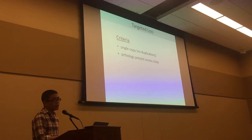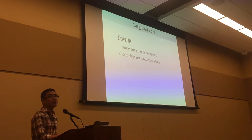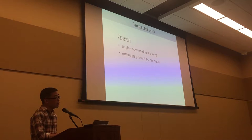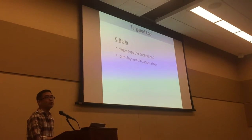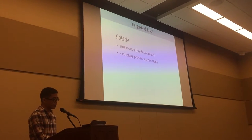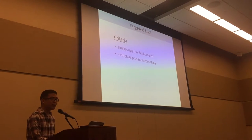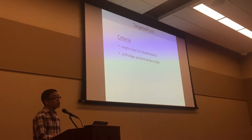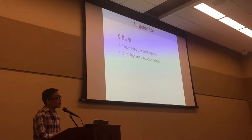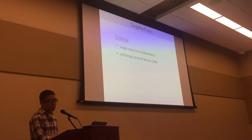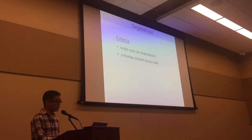For phylogenetic studies, we typically want single-copy loci, which would simplify analyses, and loci that are present or have orthologues across the clade we're interested in. In plants, until recently, there were no universal probe sets that targeted these sorts of loci, so people have been developing them on a taxon-by-taxon basis.